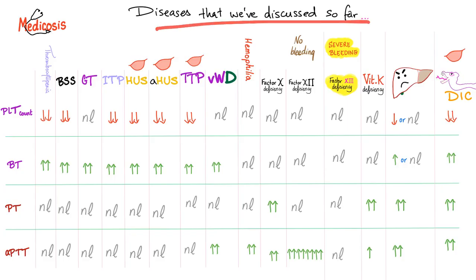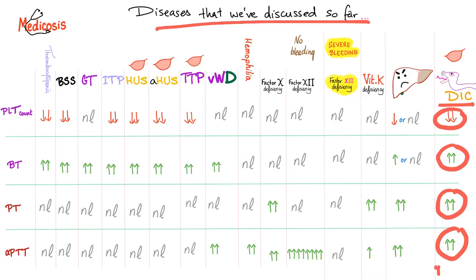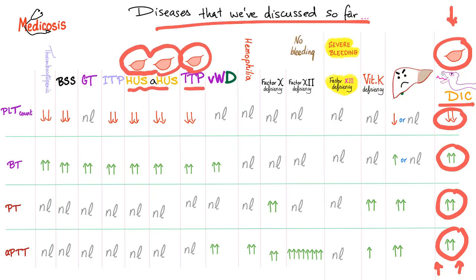Remember that acute DIC has low platelet count, high bleeding time, prolonged PT and PTT, high D-dimer, and high fibrin degradation products. Coagulation factors have been consumed. Don't forget that we see schistocytes with DIC, with TTP, and with hemolytic uremic syndrome — both typical and atypical.